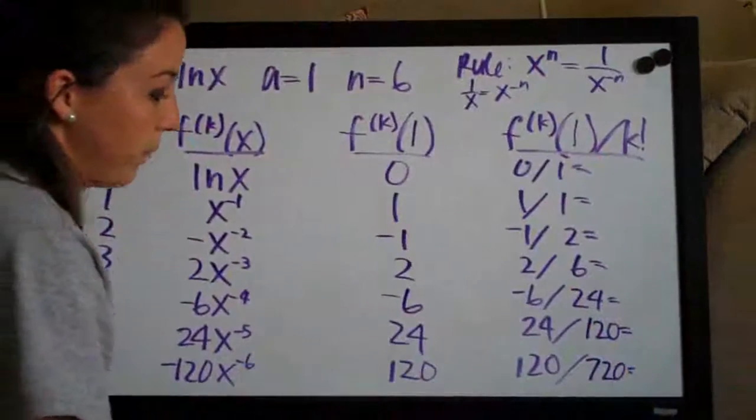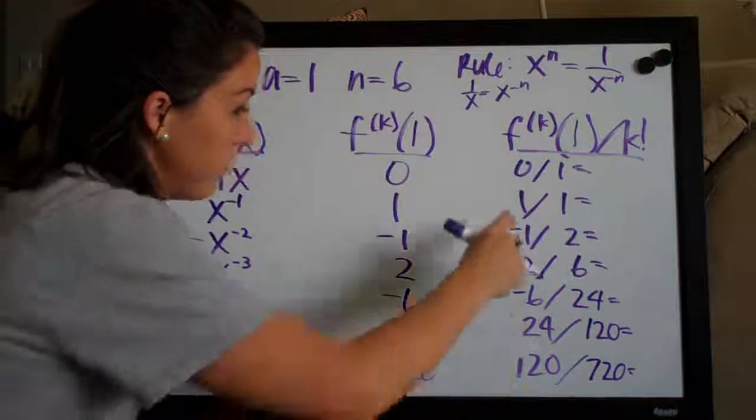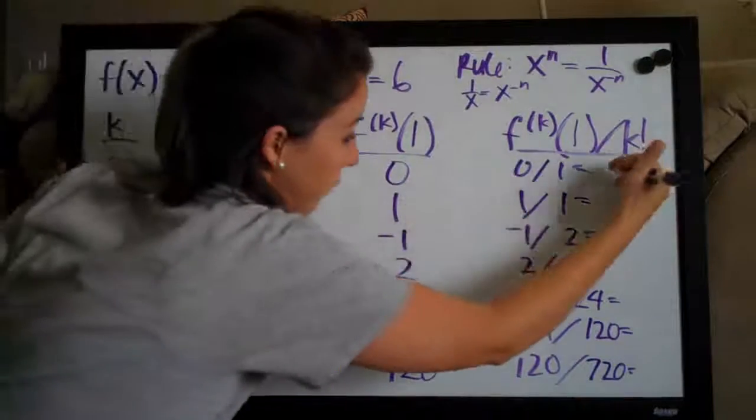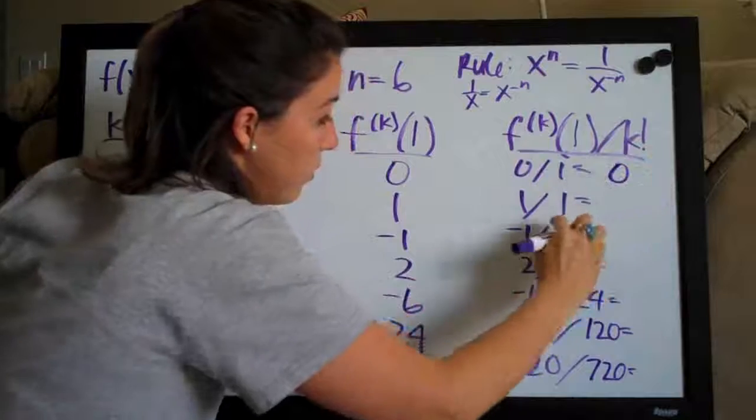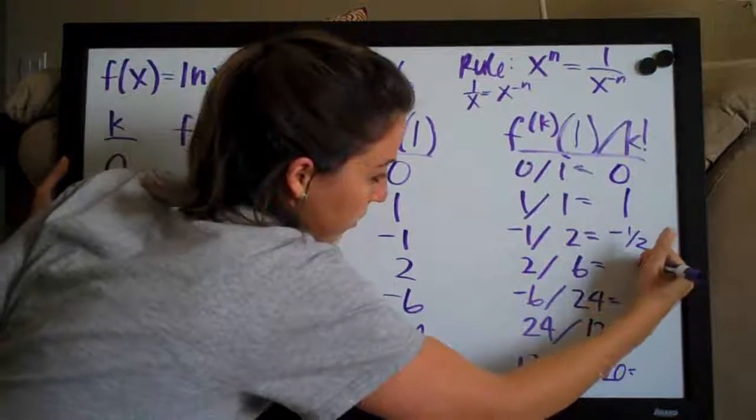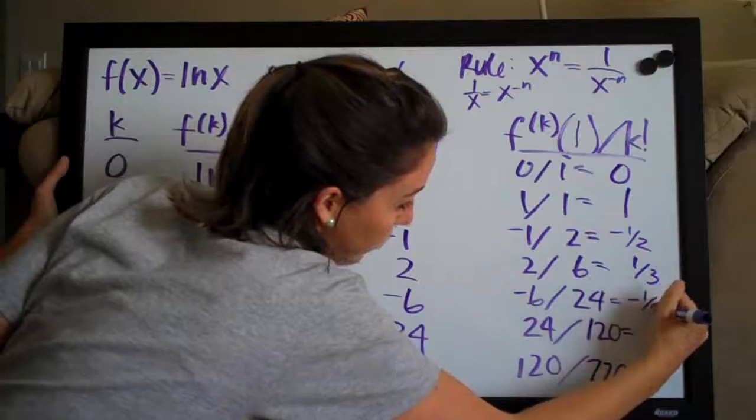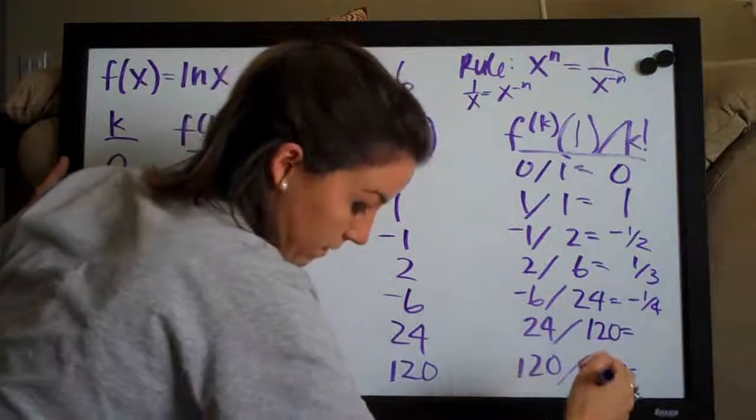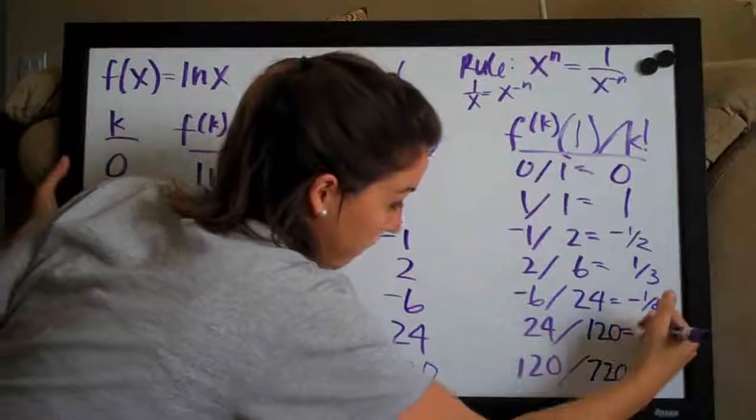Okay so then we simplify these. Zero divided by one is zero, one over one is one, this is negative one-half, one-third, negative one-fourth, this is going to be one-fifth.